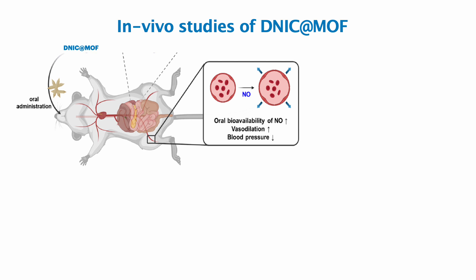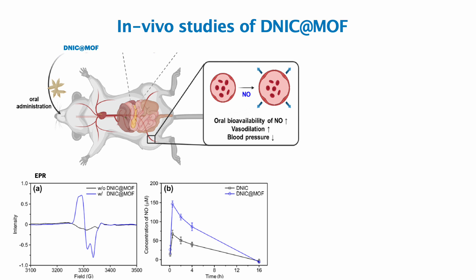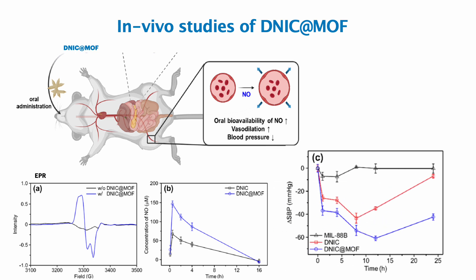In addition to the in-vitro studies, after oral administration of DNIC at MOF into mice and rats, we found albumin-bound DNIC in plasma. There was also a 2.24-fold increase in oral bioavailability of nitric oxide and decreased systolic blood pressure by 60.4 mmHg for 12 hours.